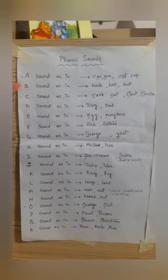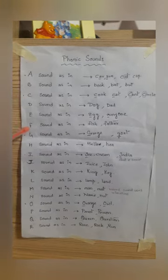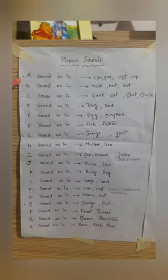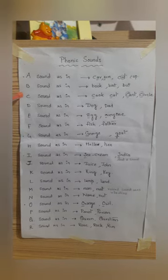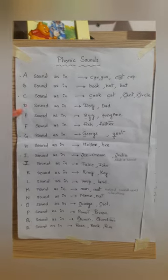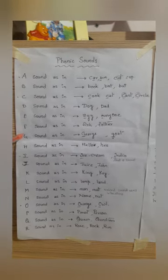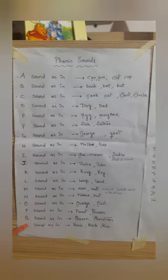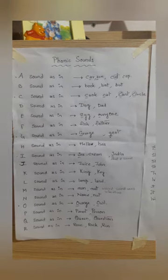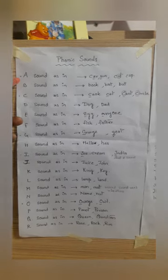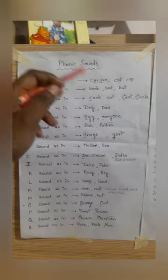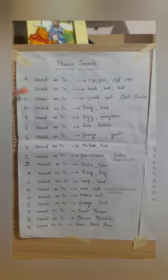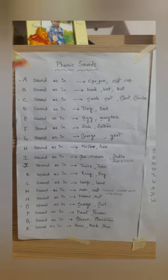So these are the names of alphabets which is A, B, C, D, E, F, G, H, I and so on. And these alphabets have their sounds which I will explain now.